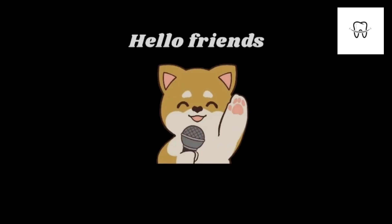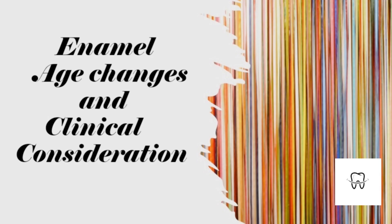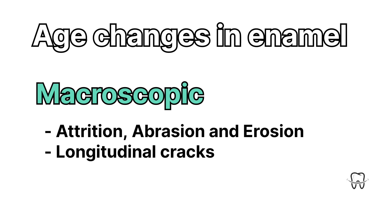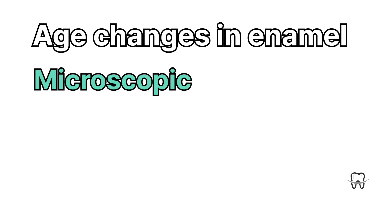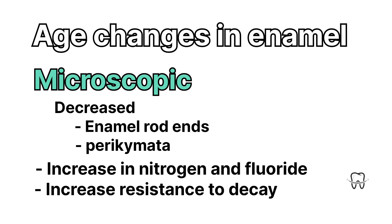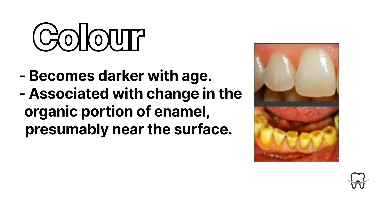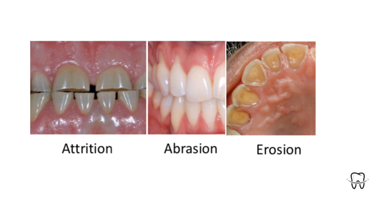Today we're going to discuss enamel age changes and clinical considerations. Age changes in enamel include macroscopic changes such as attrition, abrasion, erosion, and longitudinal cracks, and microscopic changes such as decreased enamel rod ends and perichymata, increase in nitrogen and fluoride, increased resistance to decay, and color becomes darker with age, as seen in the diagram.